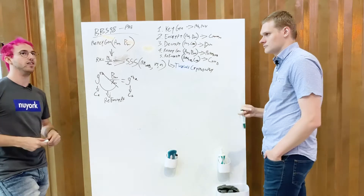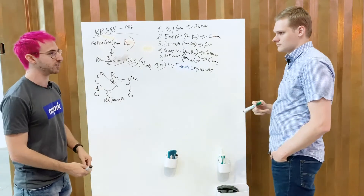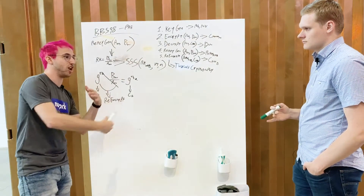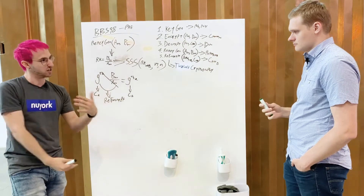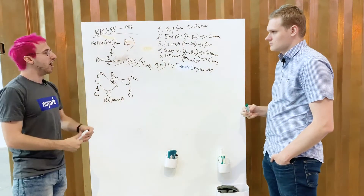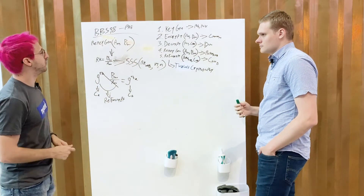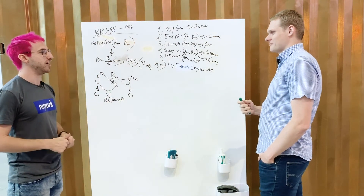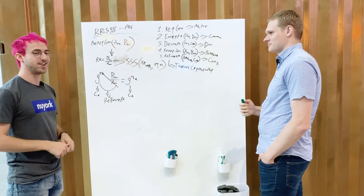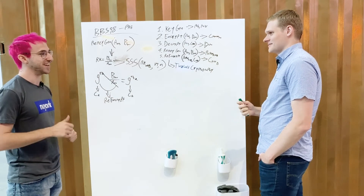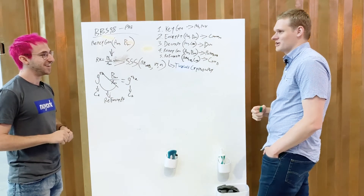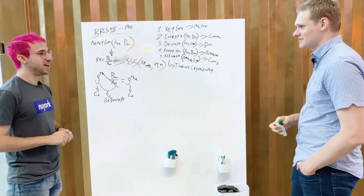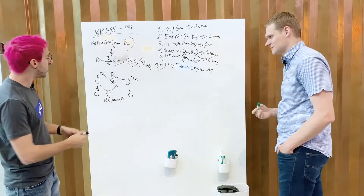The reason proxy re-encryption is getting interesting again is that we've reached a stage where we can coordinate decentralized, multi-party scenarios. Before you had to trust a single proxy with toxic material — the combined private key component. Before 1998, you simply had to trust this component entirely, which is obviously dangerous.